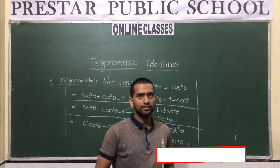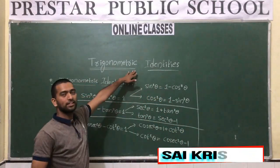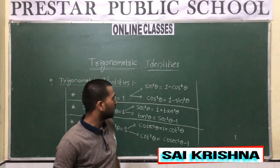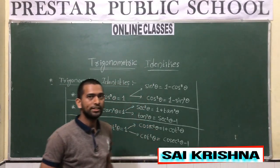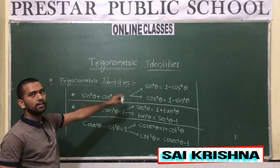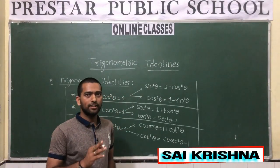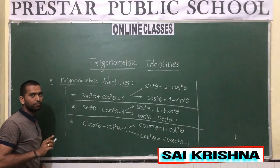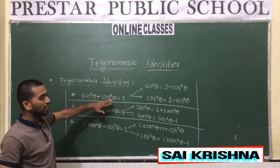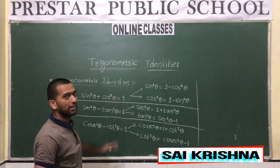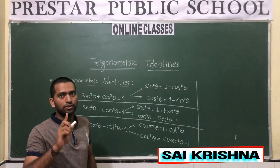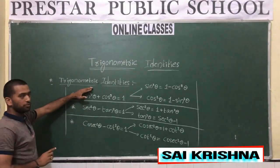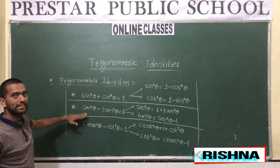Hello everyone. In the previous classes we discussed trigonometric basics as well as trigonometric ratios. Now in today's class we are going to learn about trigonometric identities. In trigonometry there are three important identities which are very important, and based on these three trigonometric identities you will get long answer questions in exams. Just look at these three identities.